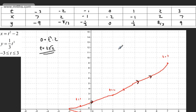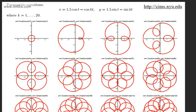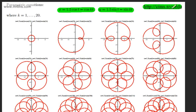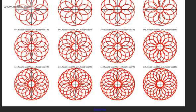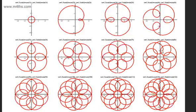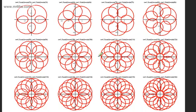Some parametric equations produce amazing curves. For example, x = 1.5cos(t) - cos(kt), y = 1.5sin(t) - sin(kt). When k=1 you get a circle, k=2 gives a cardioid, and as k increases up to 20 you end up with these awesome rosette patterns. Check out the referenced site to see them.